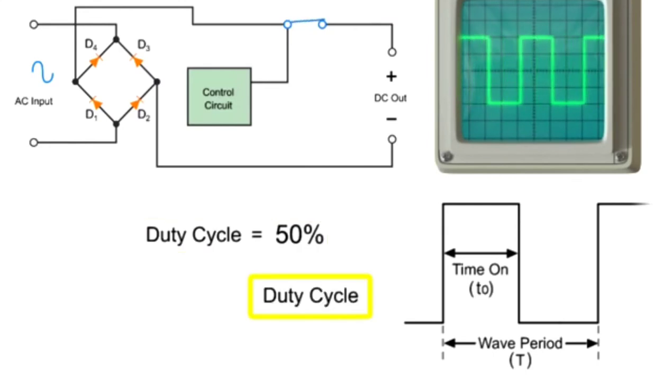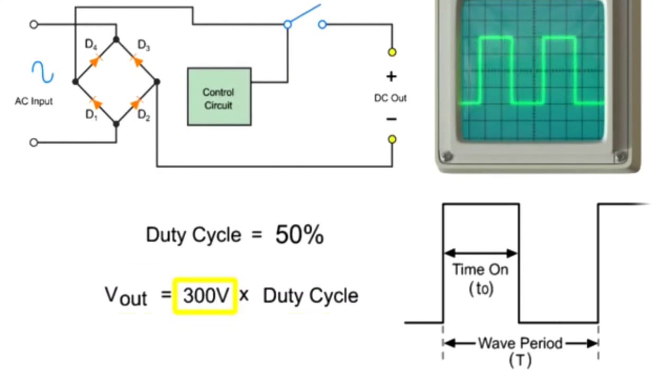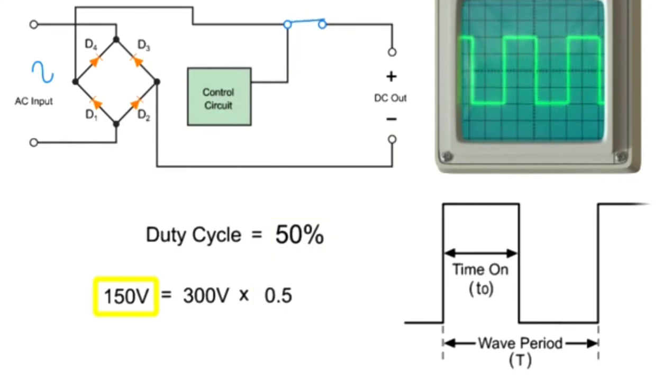Multiplying the duty cycle times the input voltage will give you the voltage output. In this example, a 300 volt input will be modulated by 50%, so the final voltage delivered to the load or motor is 150 volts.